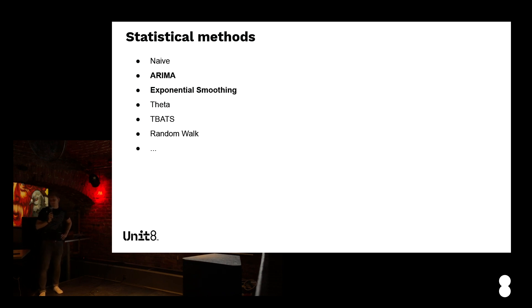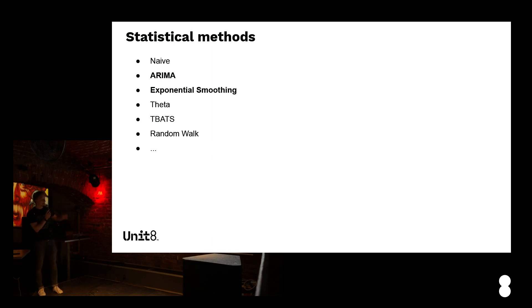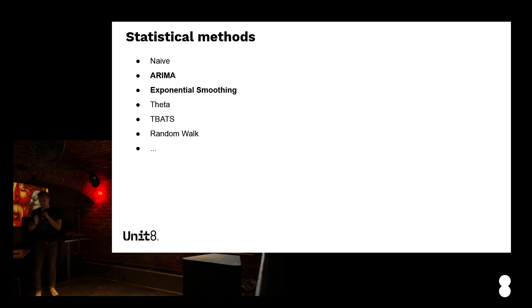When it comes to classical methods for forecasting time series, statisticians have come up with a lot of methods. There is the naive method — where the next value is exactly what you had previously. There are also other methods like ARIMA, exponential smoothing, Theta, TBATS, random, et cetera. We will have a glimpse into ARIMA and exponential smoothing just to get an intuition of how these methods work.